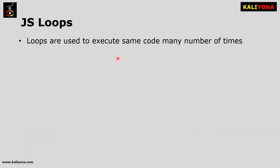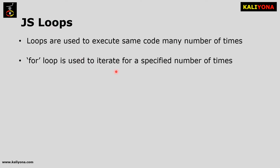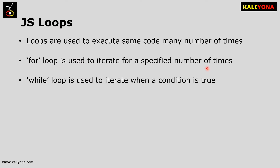Loops are used to execute the same code many number of times. When we need a set of code to execute repeatedly, we use loops. For loop is used to iterate for a specified number of times. While loop is used to iterate when a condition is true.